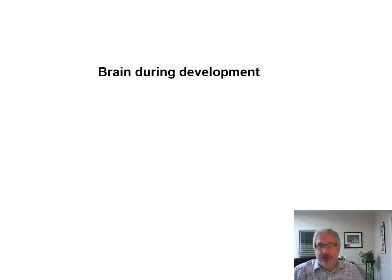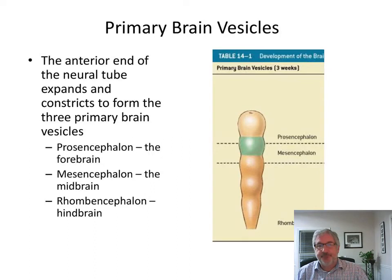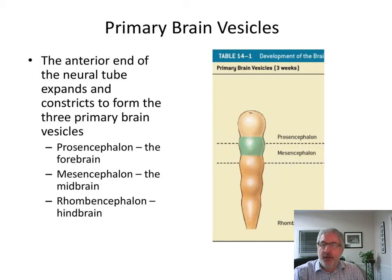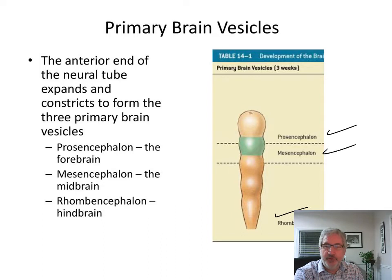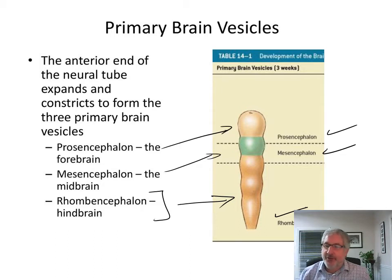A quick overview of the brain during development to see what it looks like. Here are the primary brain sections. We start off with what's called the prosencephalon, the mesencephalon, and another part called the rhombencephalon down here. The mesencephalon is here, and the prosencephalon is up here. So you have three major divisions at three weeks of brain development.